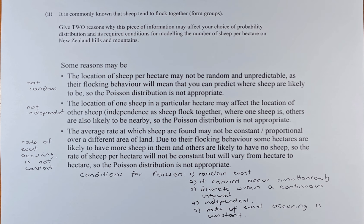As you remember from video number 1, we claimed it is a Poisson distribution. To get a Poisson distribution, there are five conditions: it must be a random event, it cannot occur simultaneously, it must be discrete within a continuous interval, it must be an independent event, and the rate of event occurring is constant.